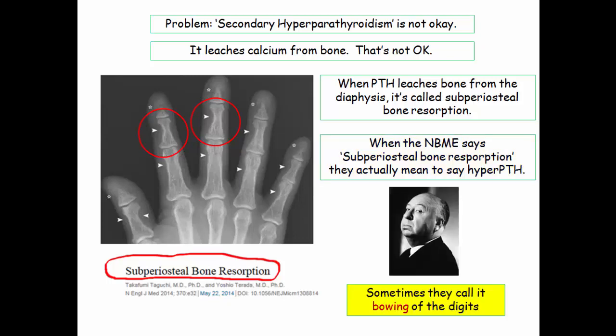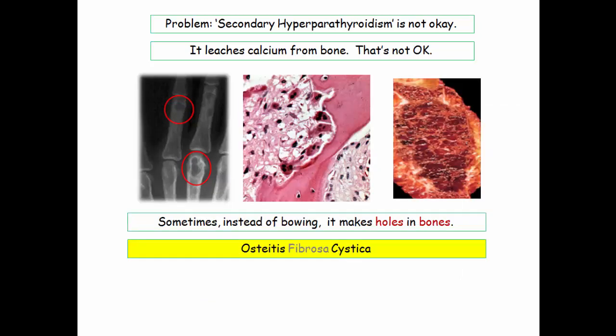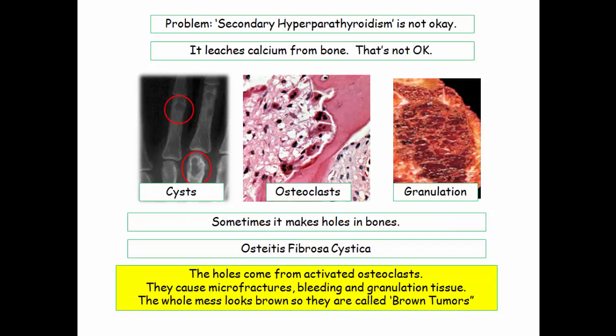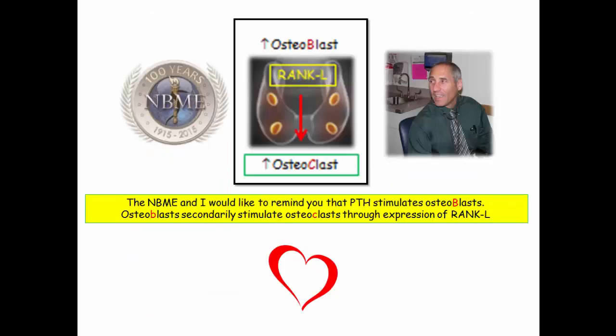Sometimes the NBME describes this process, in the appropriate context, as bowing of the digits. The second description of hyperparathyroidism includes the pathologic entity of osteitis fibrosa cystica. Osteitis refers to bone, cystica meaning cavities or holes in the bones. The holes come from activated osteoclasts, causing microfractures with bleeding and resulting granulation tissue. The bony lesions actually look brown, so they're called brown tumors. PTH stimulates osteoblasts, and osteoclasts are secondarily stimulated through expression of RANK ligand.